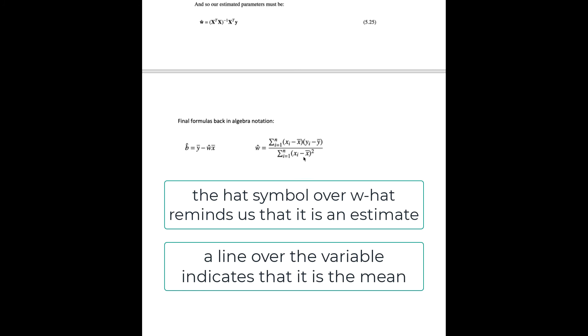over the difference between the x value and the average x value squared. And b will actually be the average y value minus w hat times the average x value.